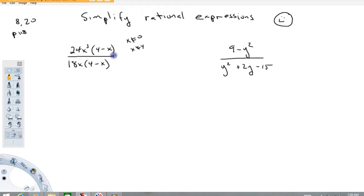Now simplifying rational expressions is pretty simple. You just divide out things that are common in the top and the bottom.